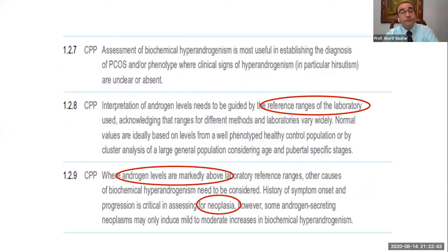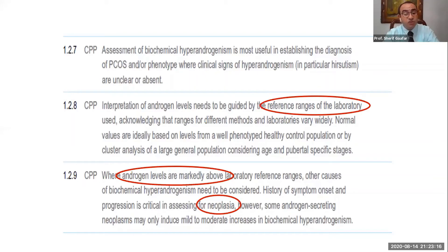Testing biochemical hyperandrogenism is useful in cases with no signs of clinical hyperandrogenism, because if the case has clinical hyperandrogenism you don't need biochemical proof. Regarding reference ranges: different ranges vary between laboratories, and according to the guidelines you should stick to the reference range provided by the lab. It is also important to note that markedly elevated androgens are rarely due to PCOS — they usually indicate other causes, and neoplasia should be excluded in these cases.